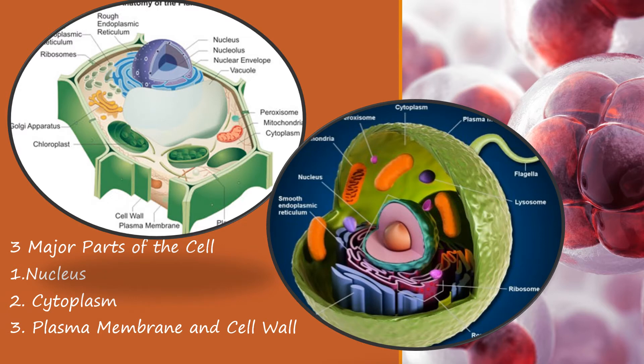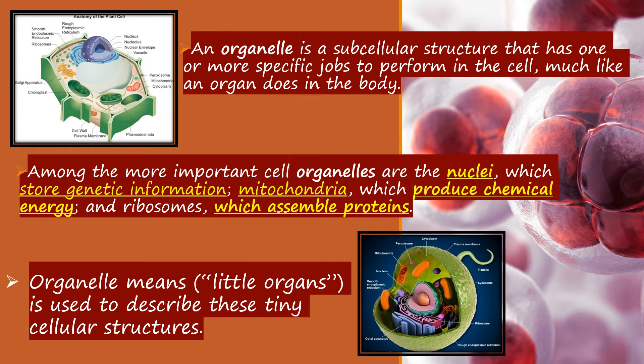There are three major parts of the cell: first, we have the nucleus; second, the cytoplasm; and third, the plasma membrane and cell wall. An organelle is a subcellular structure that has one or more specific jobs to perform in the cell, much like an organ does in the body. Among the more important cell organelles are the nuclei, which store genetic information; mitochondria, which produce chemical energy; and ribosomes, which assemble proteins. The term 'organelle' means 'little organs.'